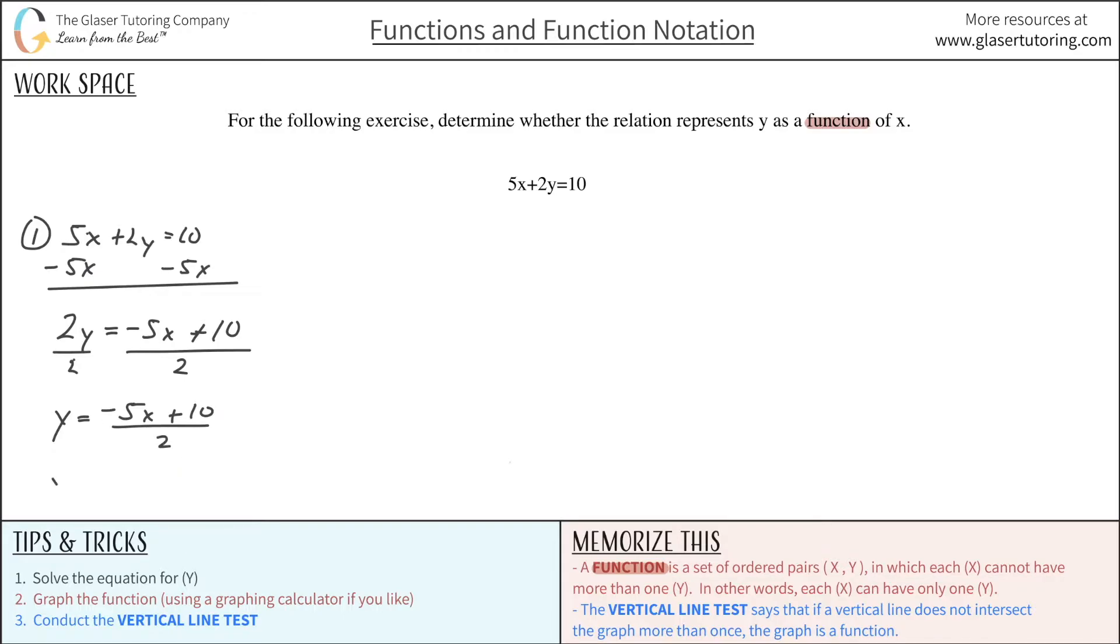You can simplify this even further. You don't necessarily have to, but you can simplify it by putting each of the values in the numerator both over 2. So I can say negative 5 over 2x plus 10 over 2, which is the same as just 5. This would be the formula for the function when I solve it for y.